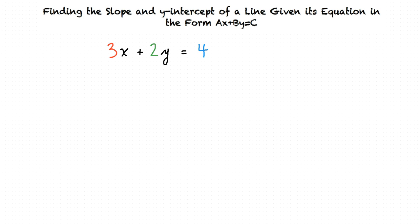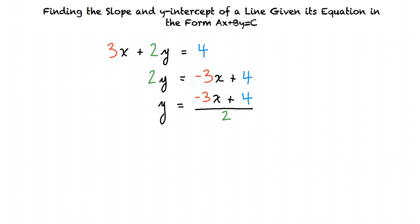We would first subtract 3x on both sides to find 2y equals negative 3x plus 4. Then we would divide both sides by 2 for a result of y equals negative 3x plus 4, all divided by 2. Then we can simplify this by dividing each term of the numerator by 2, for a result of y equals negative 3 halves x plus 2.